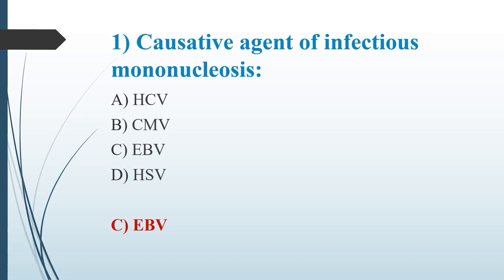Let's go through the other options. Option A: HCV, that is hepatitis C virus, which mainly causes post-transfusion hepatitis. Option B: CMV, that is cytomegalovirus, which can occasionally cause liver problems like hepatitis or mononucleosis. Option D: HSV, that is herpes simplex virus, which causes contagious sores most often around the mouth or on the genital area.